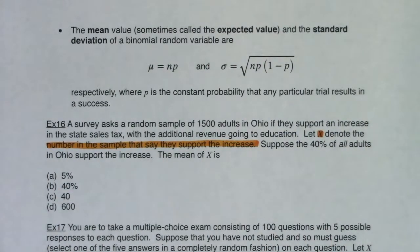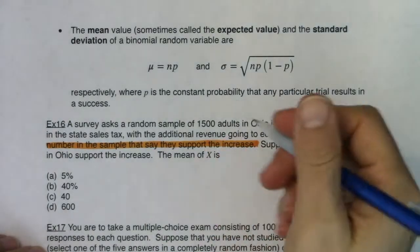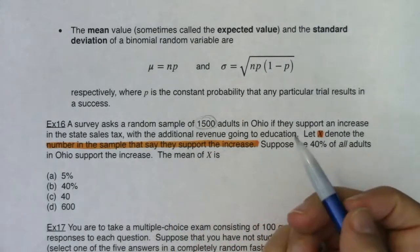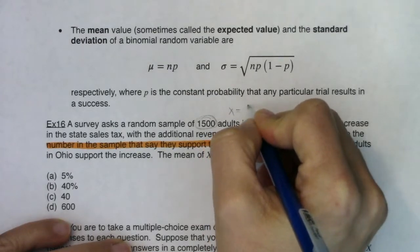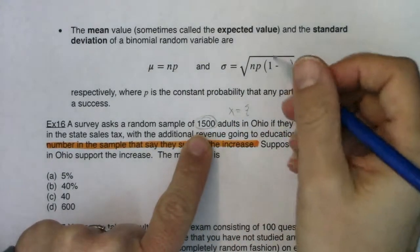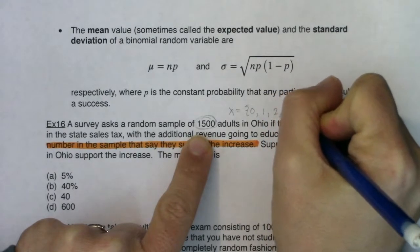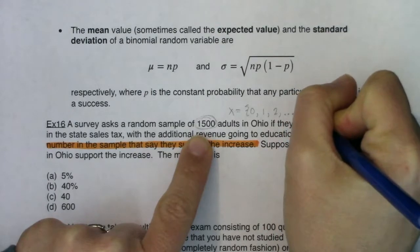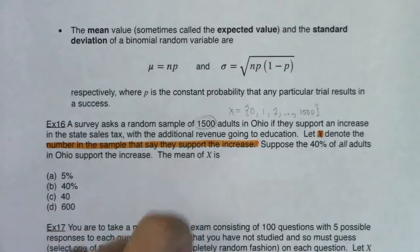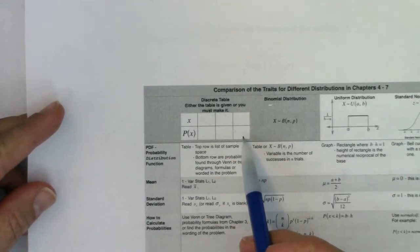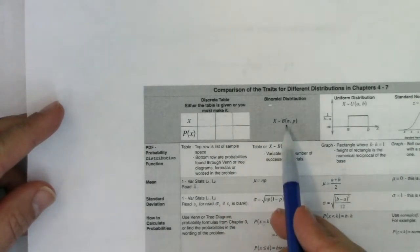When we think of the number in the sample that support the increase, am I going to count it or measure it? I'm definitely going to count it, so this is a discrete numerical variable. I have a sample of 1500, so what values could X take on? It's possible — not necessarily probable — but possible that nobody in that 1500 supports the increase. It could be one person, two people, all the way up to 1500. If I had been asked to make a table, that table would be ridiculously long — 1502 columns. That's way too many. It's binomial.